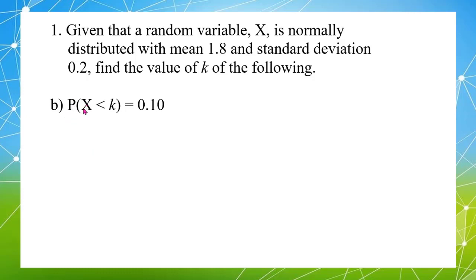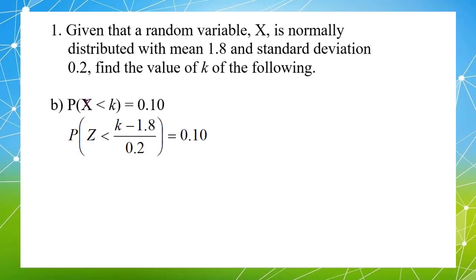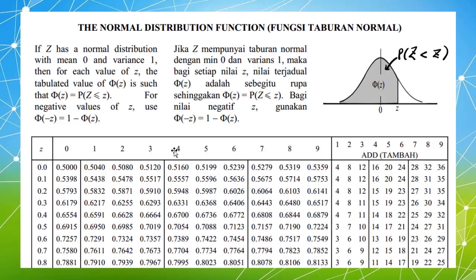Question 2: the probability that X is less than k equals 0.10. Find the value of k. First, we change X into Z, so k minus 1.8 divided by 0.2. When we check the table, we find there is no value of 0.10 — the minimum in this table is 0.5, because the table only shows probabilities for positive Z values greater than 0.5.